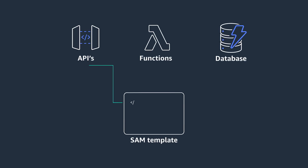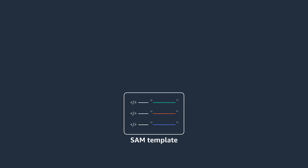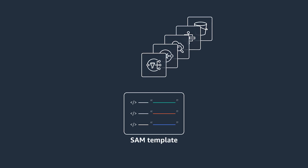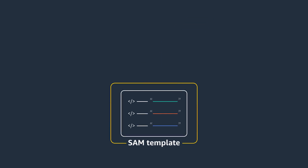SAM is an open source framework for building serverless applications that makes it easier to build applications quickly. SAM provides a shorthand syntax to express APIs, functions, databases, and event source mapping. Because SAM is built on CloudFormation, you can specify any other AWS resources using CloudFormation syntax in the same template. To learn more about SAM, visit aws.amazon.com/serverless/SAM.